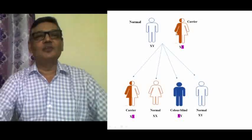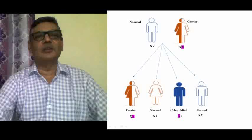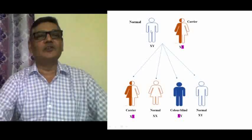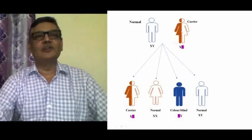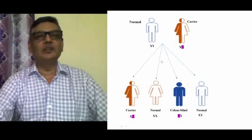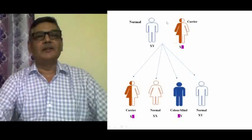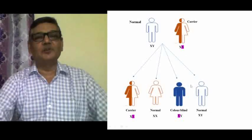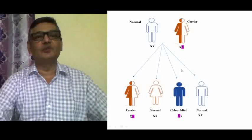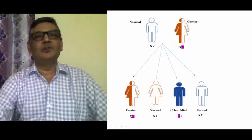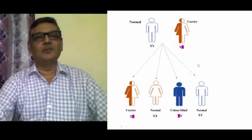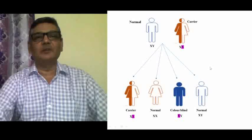There may also be a case in which the female is actually colorblind and the husband is normal. In such a condition, the daughters will actually be carriers and the sons will always be colorblind. So in a third situation where a colorblind female marries a normal person, sons will definitely be colorblind.